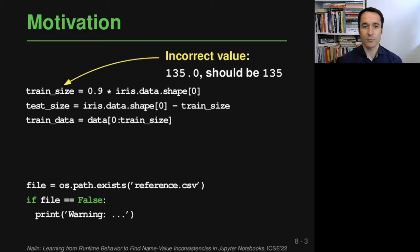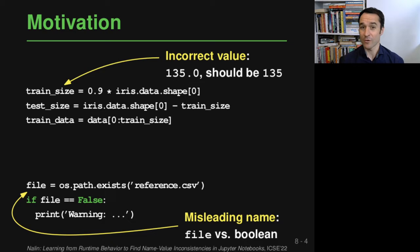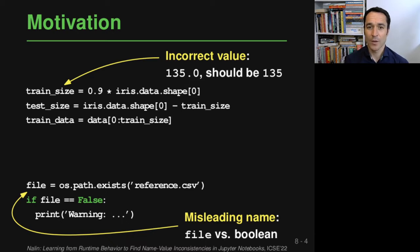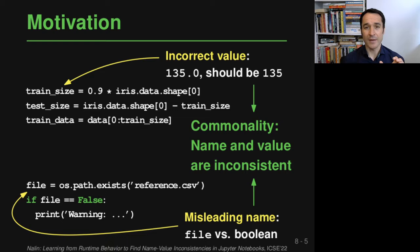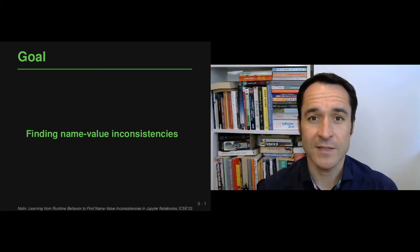When this floating point value is used in the third line to slice a data array, there's going to be a crash because you can't slice an array with a floating point as the index. A second completely unrelated problem: some code checks whether a file exists and stores the result into a variable called 'file'. There's nothing really wrong in terms of correctness, but the name 'file' is pretty misleading — you would not typically store a boolean in a variable called 'file'. What these two examples have in common is that there's a name and a value that are not consistent with each other.